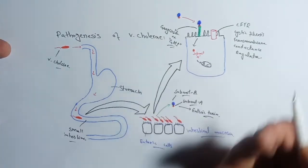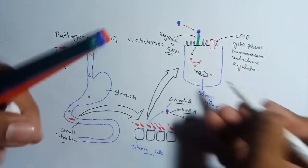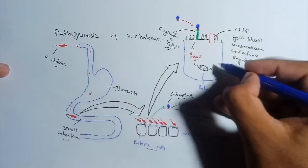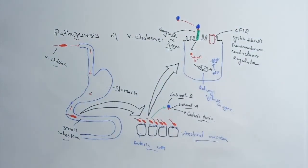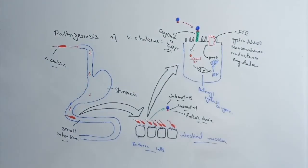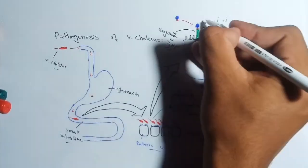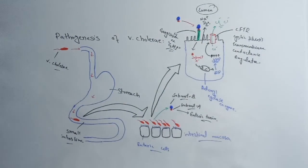As we know, adenylyl cyclase converts ATP into cyclic AMP. Then the cyclic AMP concentration will increase, it will activate CFTR, which causes the outflow of chloride ions. Due to concentration gradient, sodium and water will also move out of the cell.